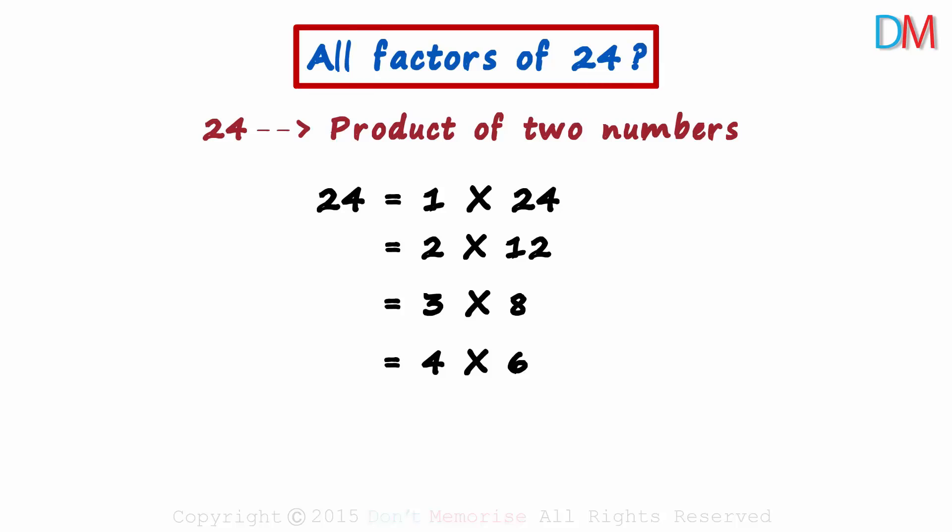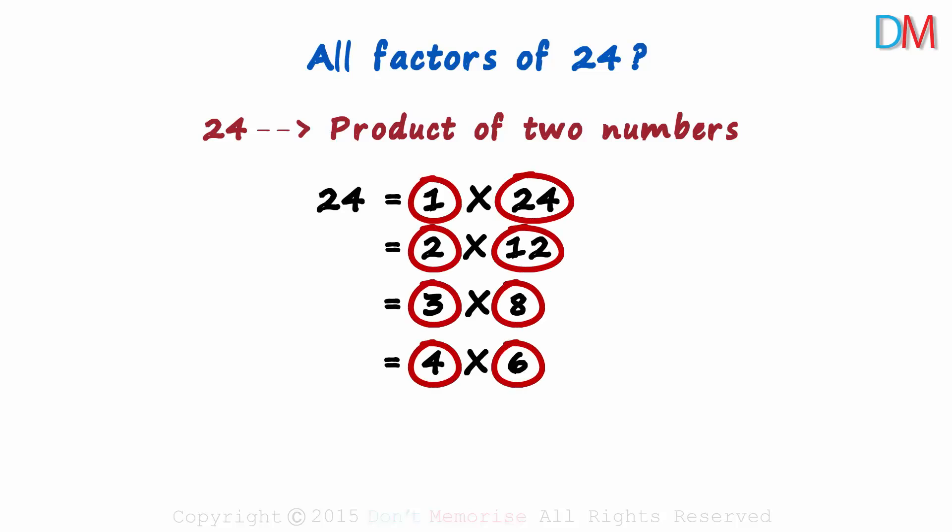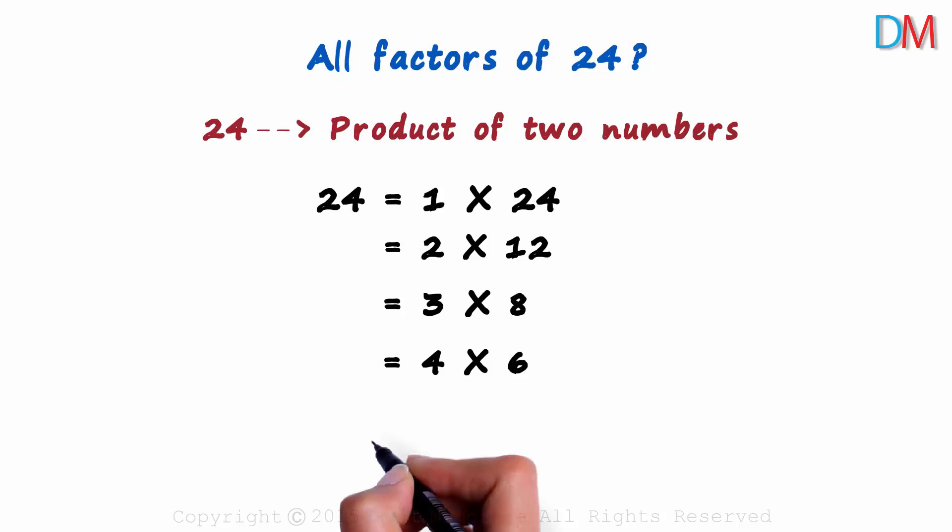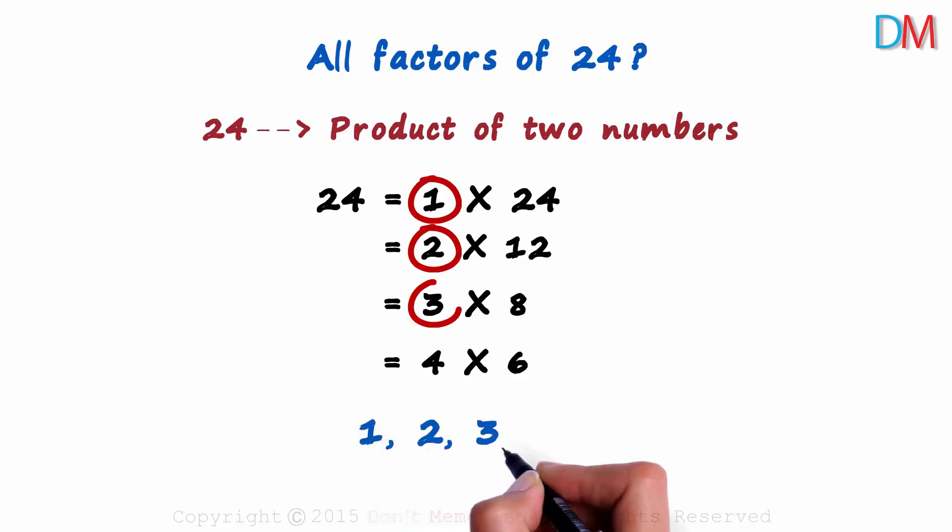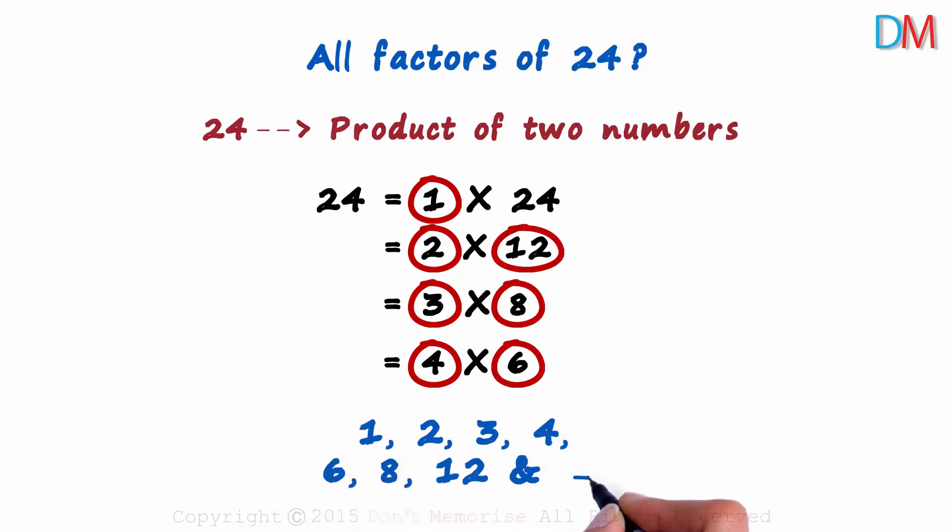What are the factors of 24 then? All these numbers individually are the factors of 24. We can say that the factors of 24 are 1, 2, 3, 4, 6, 8, 12 and 24.